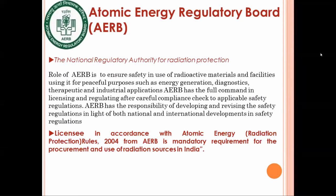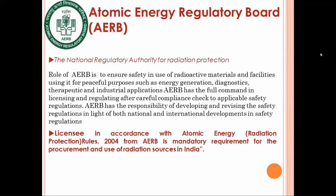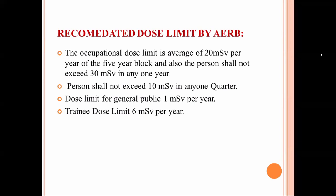The Atomic Energy Regulatory Board (AERB) monitors all radiation worker data and aims to ensure well-practiced use of radiation-generating equipment, sealed and unsealed radioactive materials. Radiation, when used properly, gives many benefits for human health — in diagnosis and treatment. The occupational dose limit recommended by AERB is an average of 20 mSv per year over a five-year block, and a person shall not exceed 30 mSv in any one year.